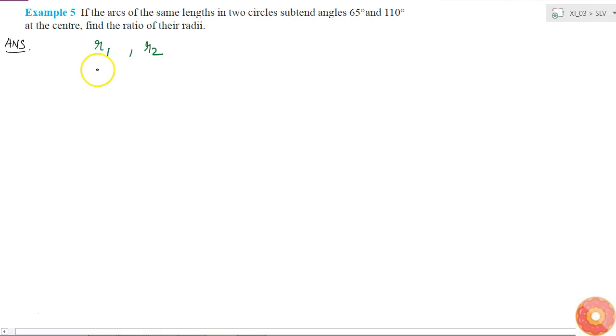So I know length of arc. Length of arc is equal to r into theta. So l1 is equal to r1 into theta 1, and l2 is equal to r2 into theta 2. Correct.